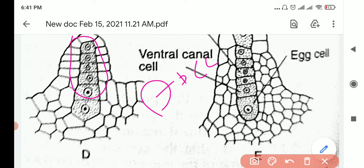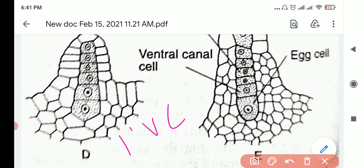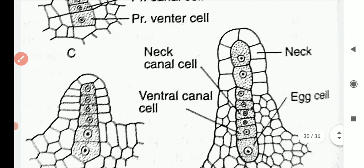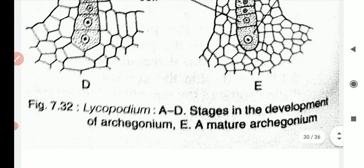From the other cell, remember we had the primary canal cell and the primary venter cell. From this venter cell you will get your egg cell. It will divide again into the primary ventral canal cell and one egg cell. This is the egg cell which will receive the antherozoids and form the zygote.